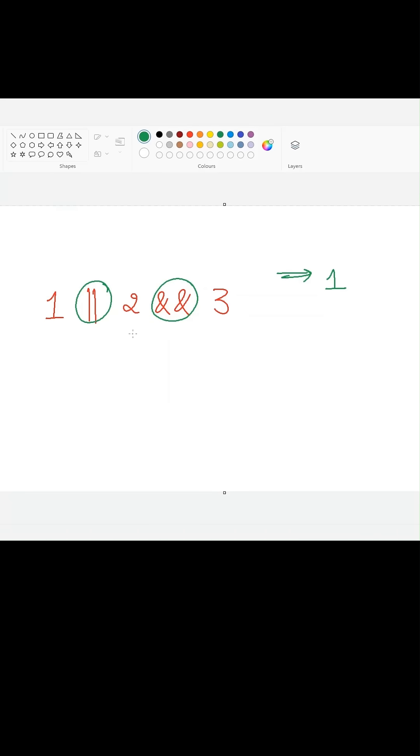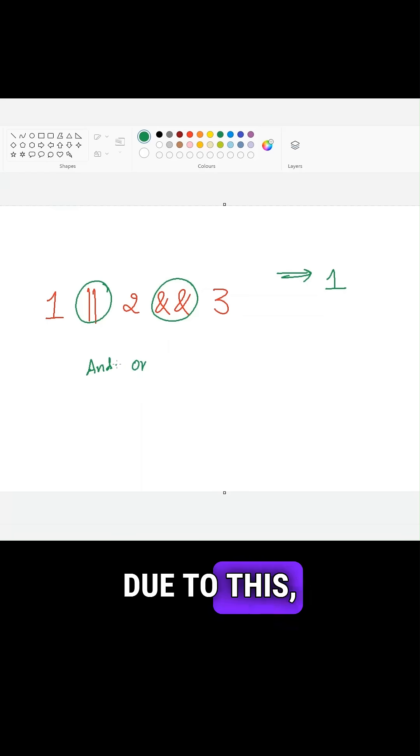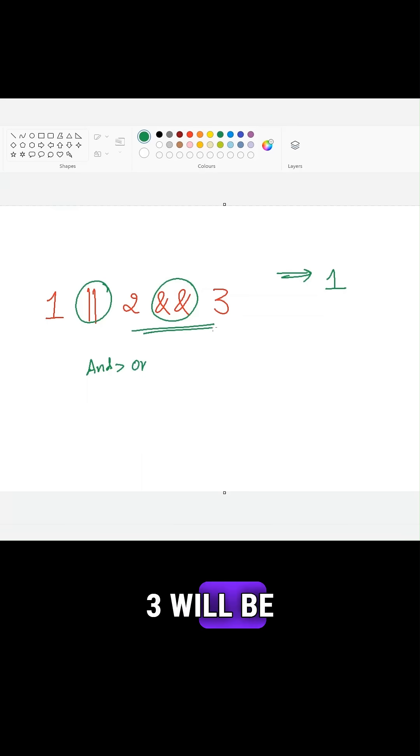In JavaScript, the and operator has more precedence over the or operator. Due to this, initially 2 and 3 will be executed.